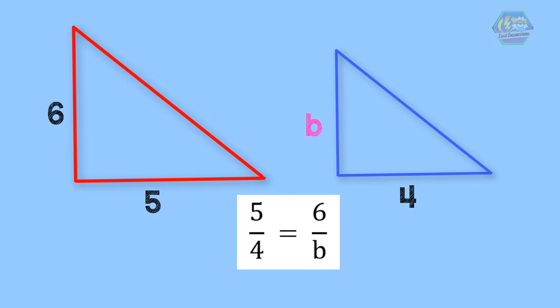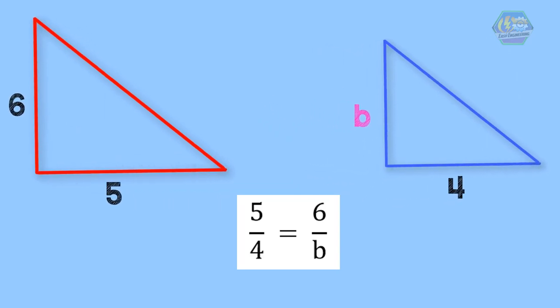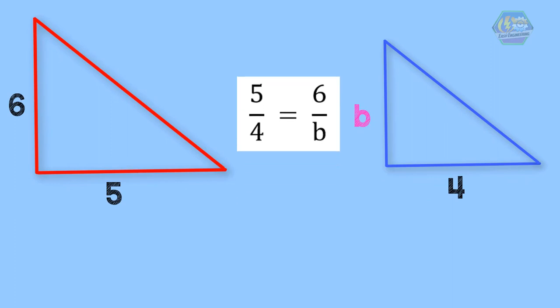We already know how to locate the extremes and means. Therefore, the extremes in this equation are 5 and variable b, and the means are 4 and 6. Using again the proportionality rule, which is product of the extremes is equal to the product of the means, 5 multiplied by variable b is equal to 5b, and 4 multiplied to 6 is equal to 24.